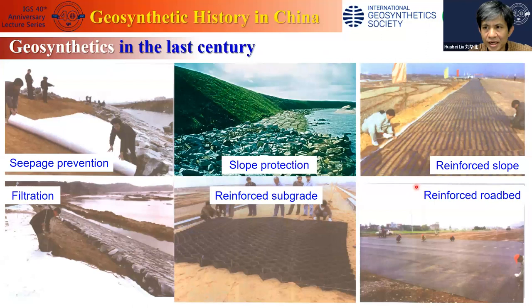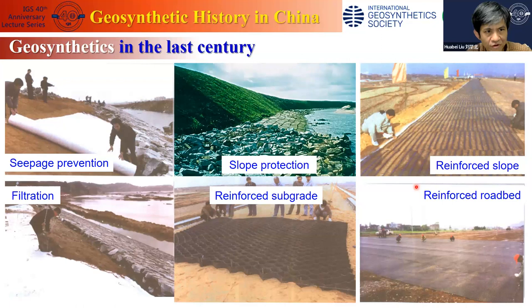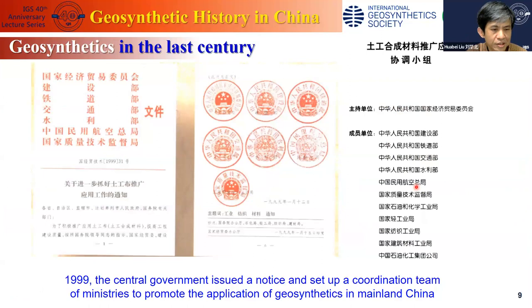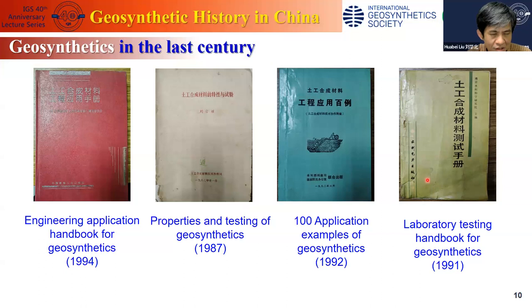These are some examples of the application of geosynthetics in the last century. In 1998, there was a very heavy flood in the Yangtze River, and many places along the river were flooded. Geosynthetics played a very critical role at that time, and many levees were actually protected by geosynthetic products. Because of this, in 1999, the central government of China issued a notice and set up a coordination team of ministries to promote the application of geosynthetics in China.